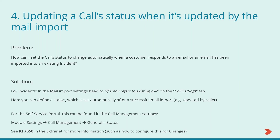The fourth question is how to update a call status when the call is updated by the mail import. Customers want to be able to see if one of their customers has responded to an incident via email or if an email has been imported into an existing incident. You can set the status of a call to update automatically to inform you of this. For incident management, open up the mail import settings within import settings — this may be under functional settings depending on the version of Topdesk you're using. Then open up a mailbox and navigate to the 'If Email Refers to Existing Incident' block within the Incident Settings tab. Here you can define the status that the call will change to — for example, 'updated by caller' — and this status will be set automatically after a successful mail import occurs.